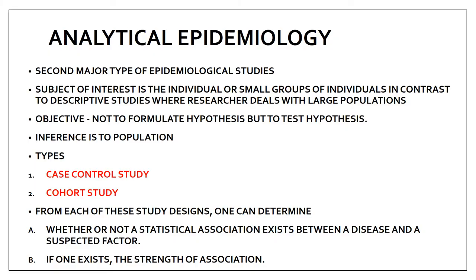In our example, smoking is the factor and cancer is the outcome. Through analytical epidemiology we can determine whether smoking truly causes cancer, and if so, what is the strength of that association — how severely it can affect someone. We will now look at case-control and cohort studies in this video.